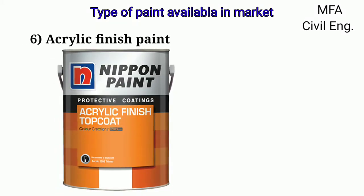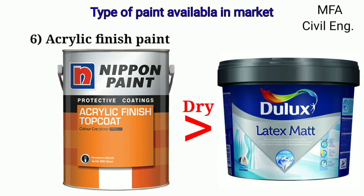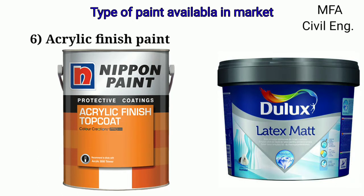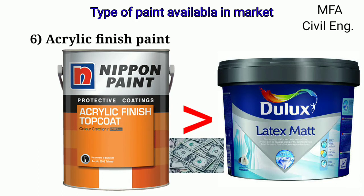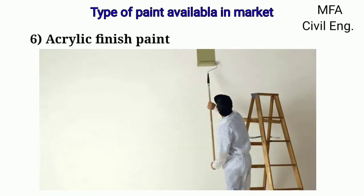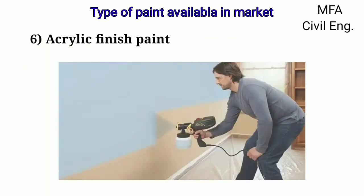Acrylic paint has all the features of latex paint but dries faster. It is a type of latex paint in formulation. Its cost is slightly more than latex paint. It can be applied with a brush, roller, pad painter, or spray gun.